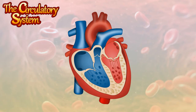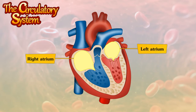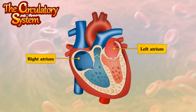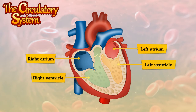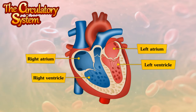The heart has four chambers. The two upper chambers of the heart are known as the right atrium and left atrium. The two lower chambers are known as the right ventricle and left ventricle. The right side and the left side of the heart are separated by a wall called the septum.